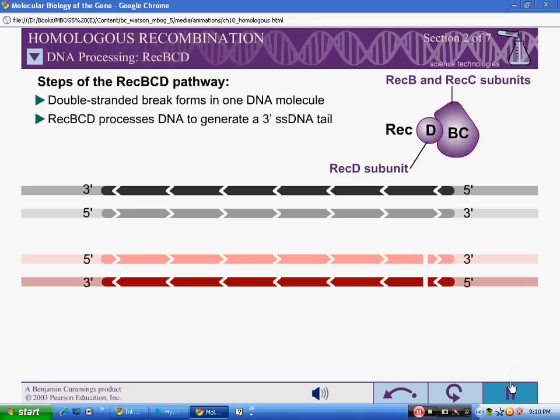REC-BCD is composed of three protein subunits that are the products of the REC-B, REC-C, and REC-D genes.